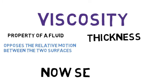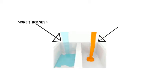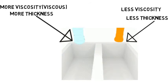Now look at the figure. There are two fluids. The first fluid in the left side has less thickness, so this fluid has less viscosity. The fluid with more thickness has higher viscosity. So the left side fluid is less viscous and the right side fluid is more viscous.